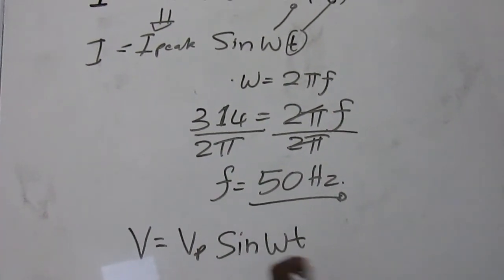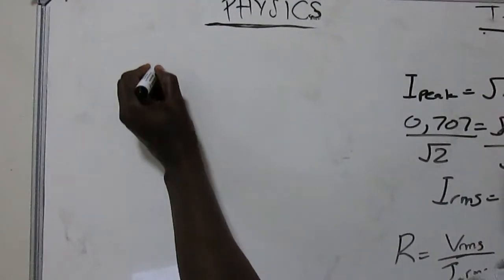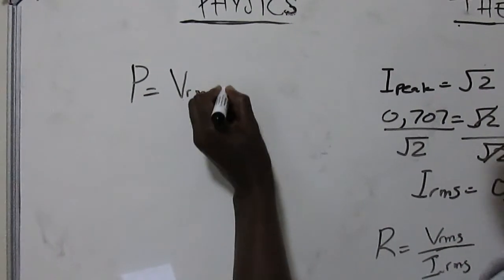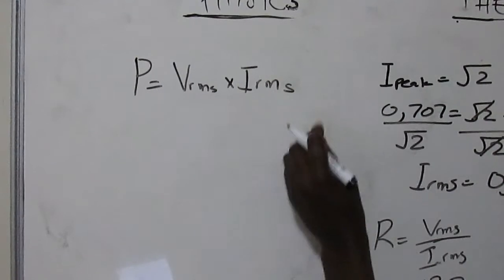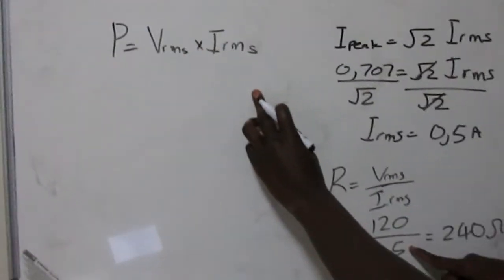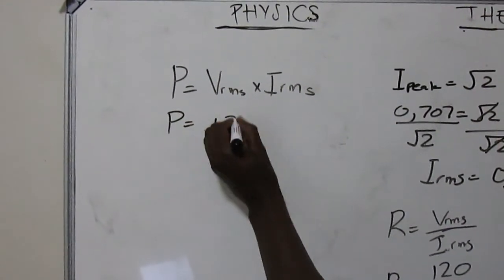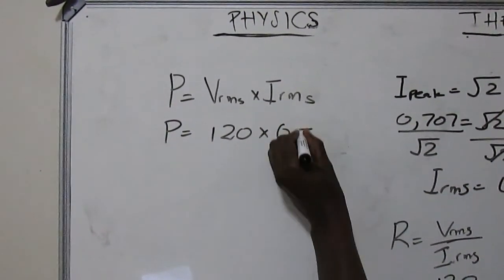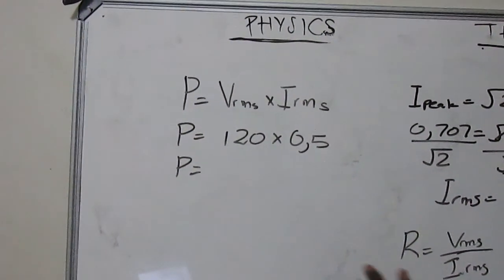The same equation can be written for voltage: V = V_peak × sin(ωt). Power is calculated as P = V_rms × I_rms. With V_rms = 120 V and I_rms = 0.5 A, the power is P = 120 × 0.5 = 60 watts.